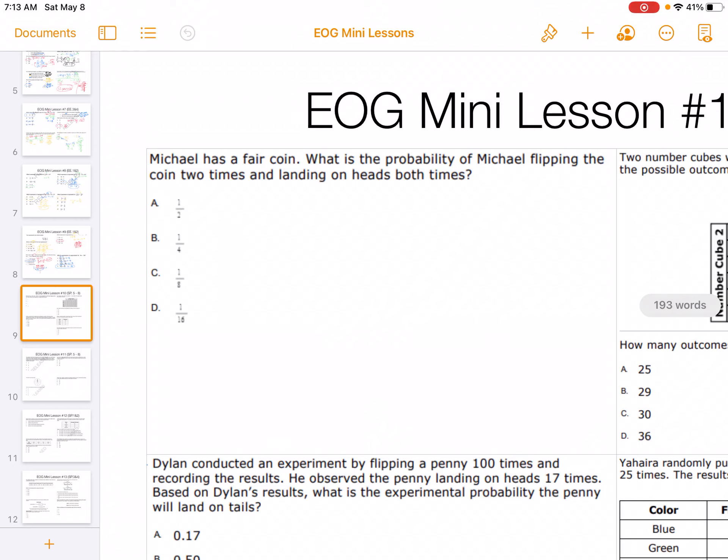EOG mini lesson number 10. Michael has a fair coin. What is the probability of Michael flipping the coin two times and it landing on heads both times?